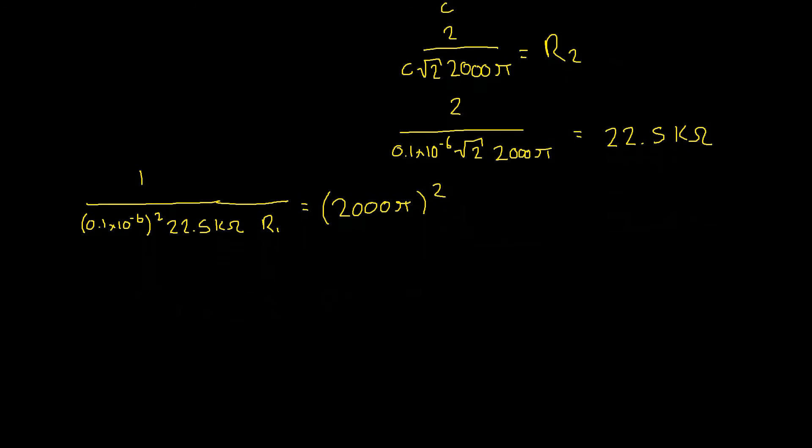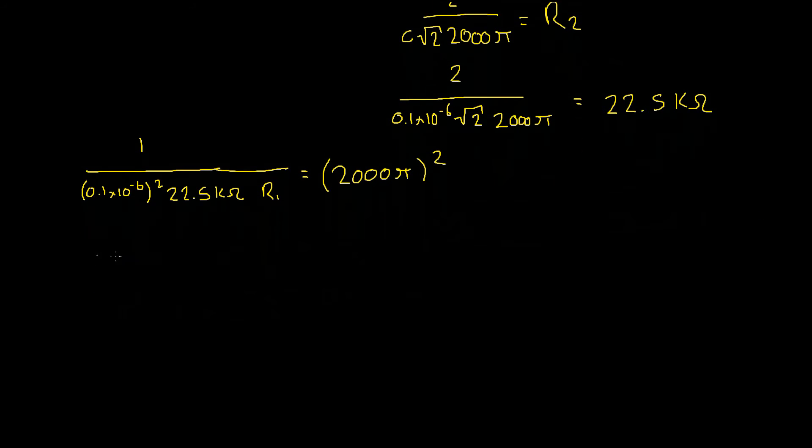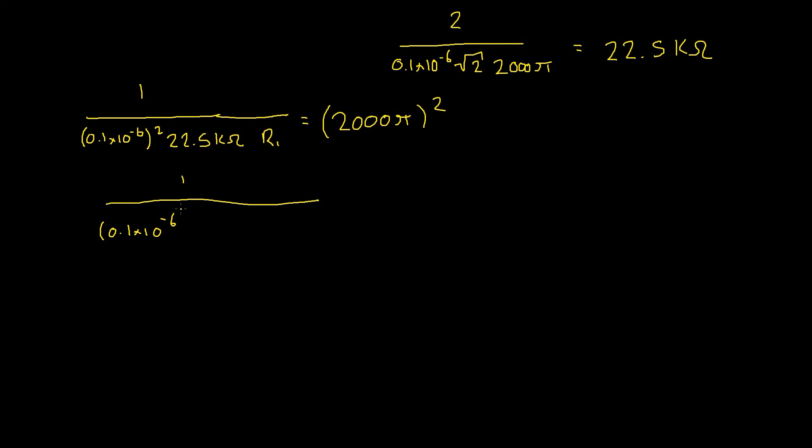Excellent, so now we can do the same thing as we did in the previous example, we can multiply through by R1 and divide through by 2000 pi squared which will give us 1 divided by 0.1 times 10 to the power of negative 6 squared as we have 2 terms times 22.5 kilo ohms